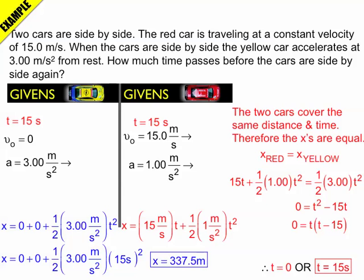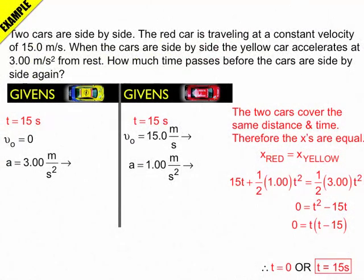But there's more I can calculate. I can also calculate the final velocity of either of these cars. So using that time, I can still do the calculations for the final velocity using v equals v0 plus at.